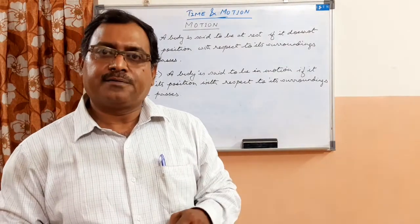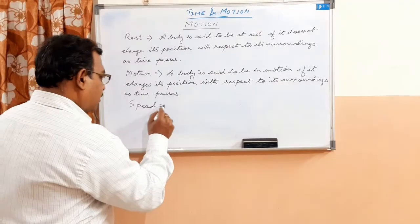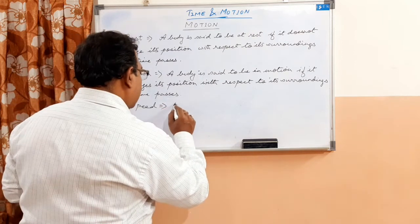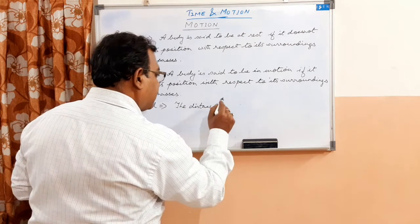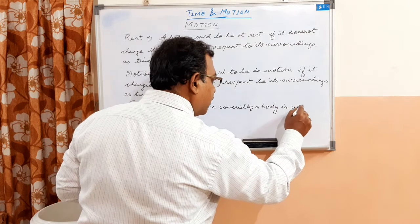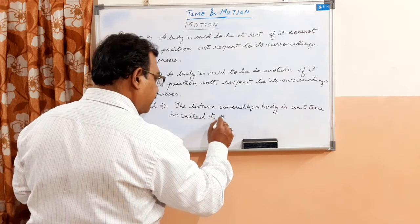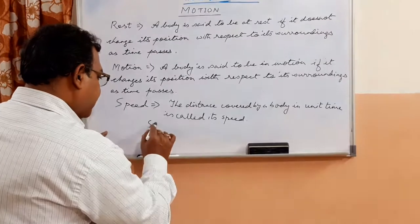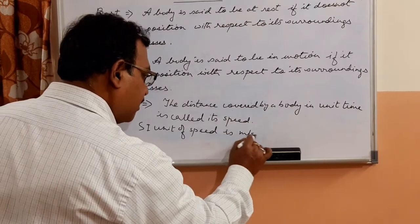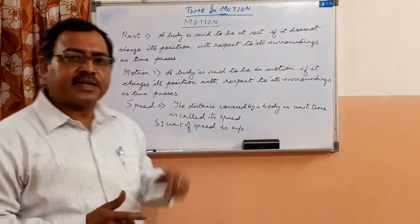Now whenever you come to motion, you must know what is speed. How will you define speed? The distance covered by a body in unit time is called its speed. The SI unit of speed is meter per second.